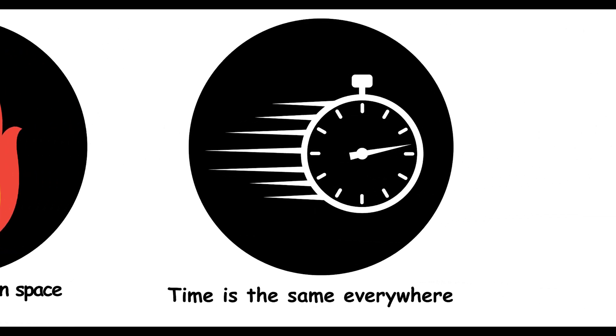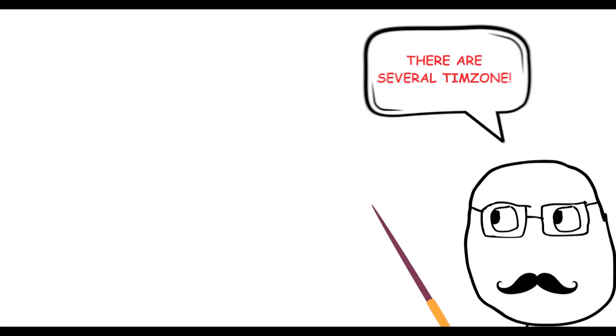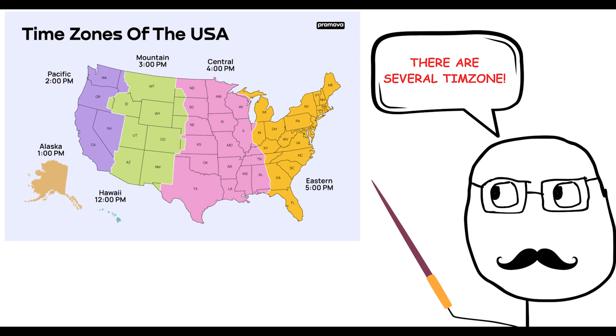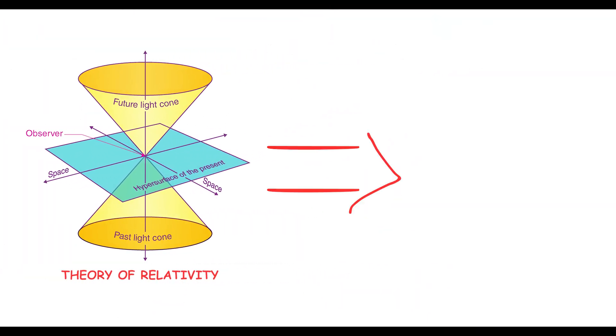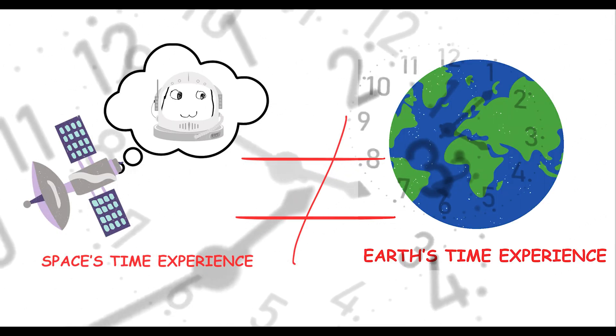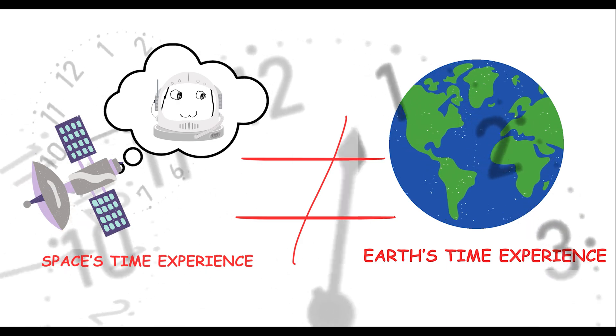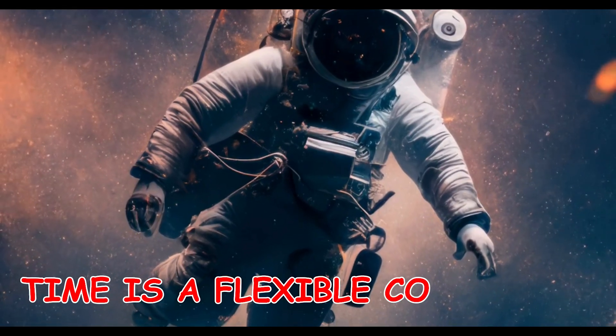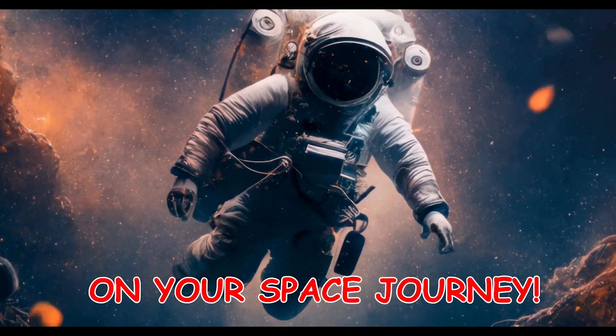Time is the same everywhere. Think time is the same everywhere? Time can warp. According to relativity, time can speed up or slow down depending on speed and gravity. Astronauts in space experience slightly different time than we do on Earth. So, time is a flexible companion on your space journey.